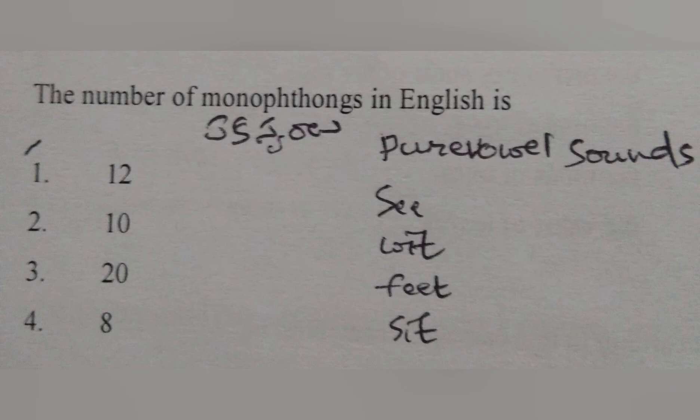For example, when you say 'C', the sound 'E' comes. When you say 'SIT', the 'I' sound comes. Similarly, when you say 'WIT', the 'I' sound comes. When you say 'FEET', a long vowel sound comes.